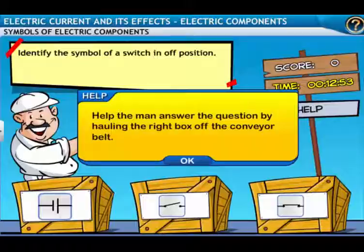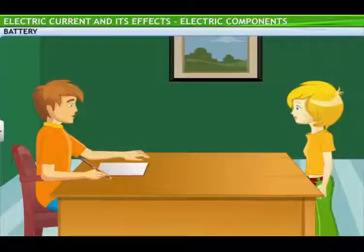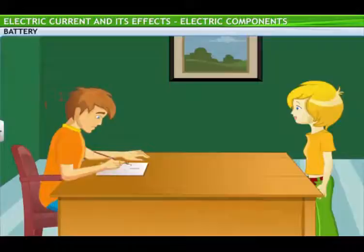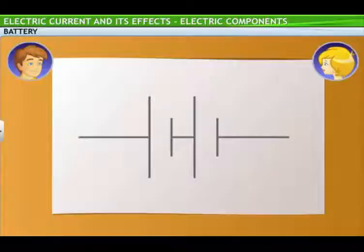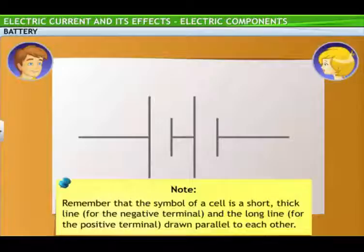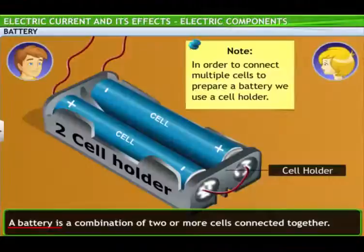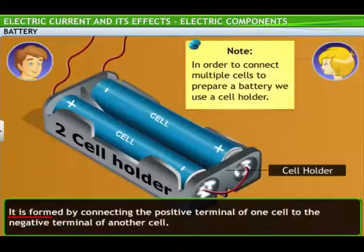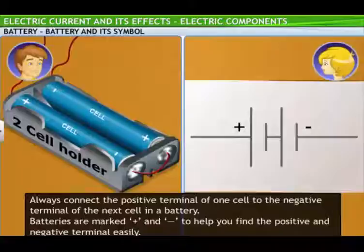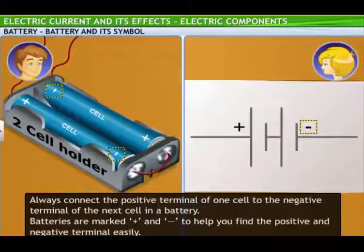Now, let's go one step further. Let's see if you're able to recognize the next symbol that I draw. That looks like the symbol for many cells connected together. That's good, Tina. This symbol does show many cells connected together, and it is a symbol for a battery. A battery is a combination of two or more cells connected together. It is formed by connecting the positive terminal of one cell to the negative terminal of another cell. Oh, I get it. That's why the symbol for a battery has the long lines, each showing the positive terminal, and the short lines, each showing the negative terminal of a cell, alternately drawn one after the other.